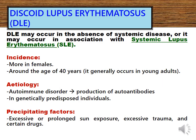Discoid lupus may occur alone or in association with systemic lupus erythematosus. Both are more common in females around the age of 14. It is due to the production of autoantibodies in a genetically predisposed individual.